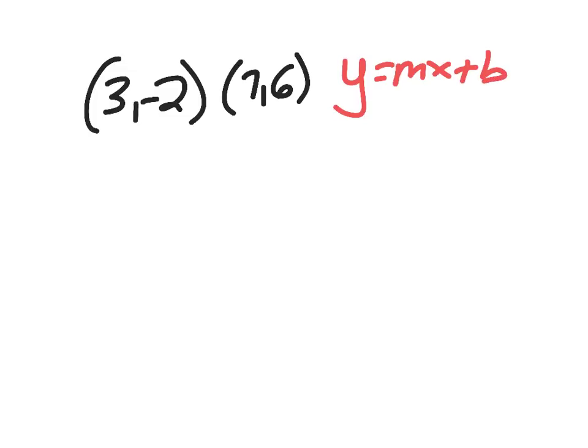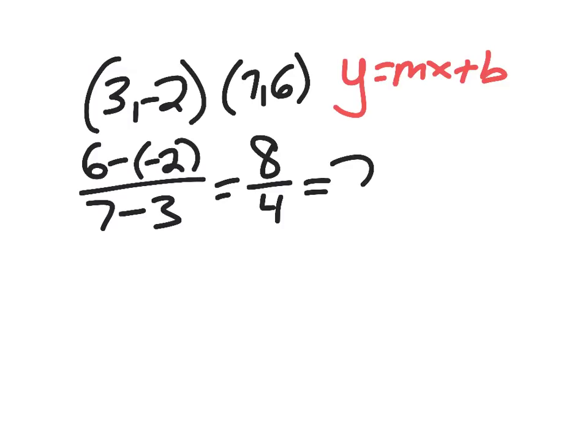But I can begin by finding my slope using the given points. So I'm going to do y minus y over x minus x, so that would be 8 over 4, which is 2.